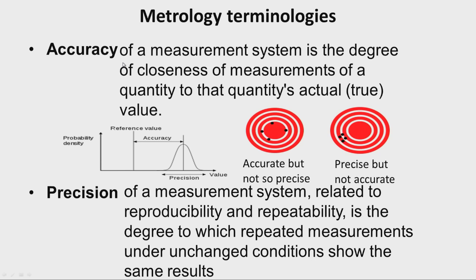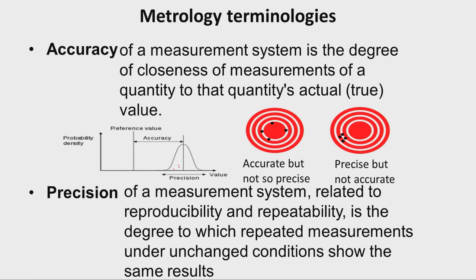The first term is accuracy of a measurement system. It is the degree of closeness of measurements of a quantity to that quantity's actual or true value. We can understand this term by referring to a figure where the x-axis shows measured values and the y-axis shows probability density, with all measurement points scattered.